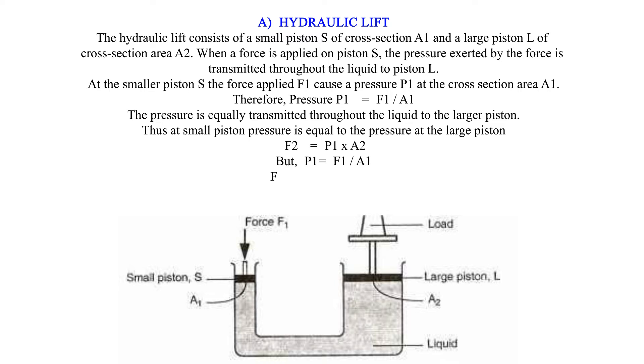F2 equals P1 times A2. But P1 equals F1 over A1. F2 equals F1 times A2 over A1. F2 over F1 equals A2 over A1.